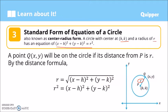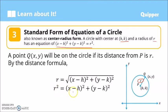Recalling the distance formula: d = √[(x₂ − x₁)² + (y₂ − y₁)²]. Substituting the coordinates of the center and point Q, then squaring both sides, we get r² = (x − h)² + (y − k)². This is the center-radius form of the equation of the circle.